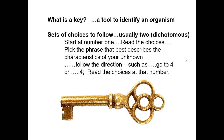If it says go to four, you skip choices two and three and go right to four. You don't even look at two and three. Then you read the two choices at four, see what they are, pick the one that fits your organism, and it will again tell you where to go.